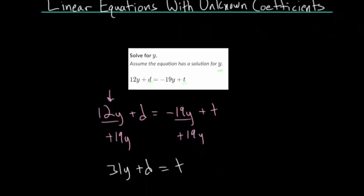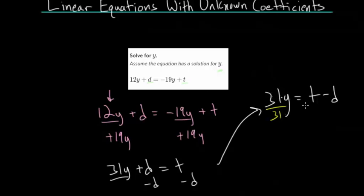At this point, I want to get y by itself. Right now it has this plus d on the same side. So I can essentially move the d to the other side. Since we're adding d, I can subtract d on each side. So that I get 31y equals t minus d. Now to get y by itself, I can just get rid of this multiplication by doing the opposite, I can divide. So I can divide everything by 31. So 31 divided by 31 would just be one or just y. And then I'll just rewrite this as t minus d over 31.